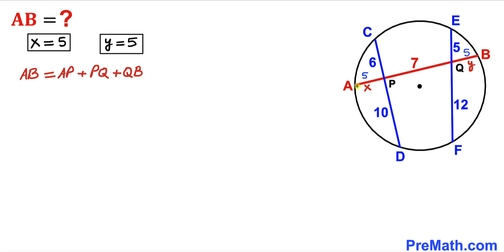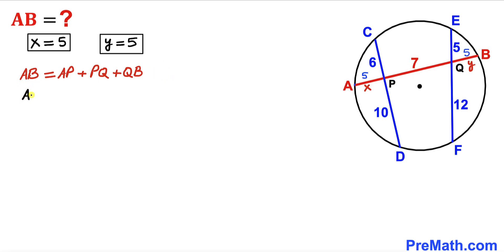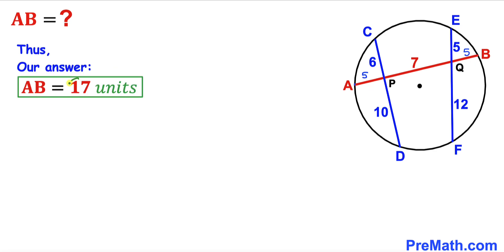Now, chord AB equals the sum of its three segments: AP which is 5, PQ which is 7, and QB which is 5. So AB equals 5 plus 7 plus 5, which gives us 17 units. Thus the chord AB length turns out to be 17 units. Thanks for watching and please don't forget to subscribe to my channel for more exciting videos.